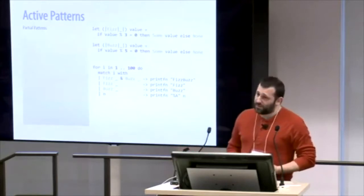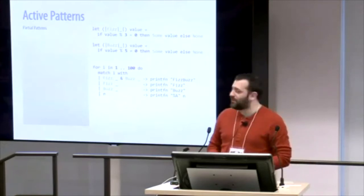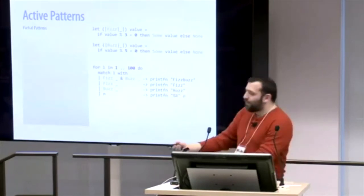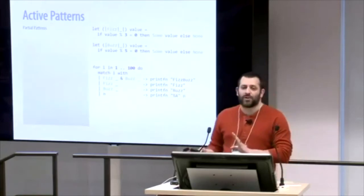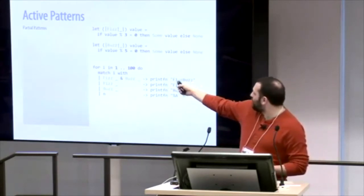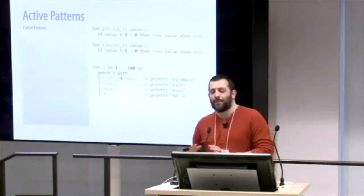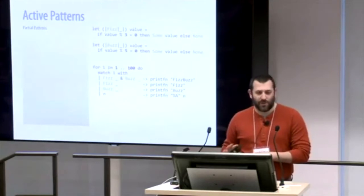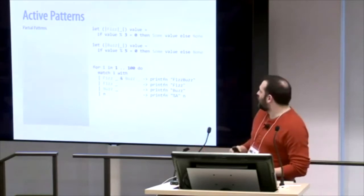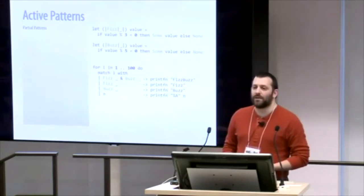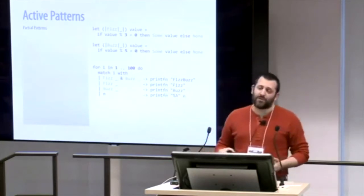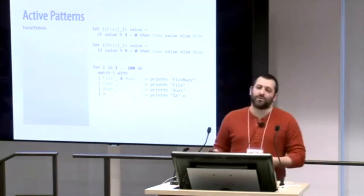Here again we're doing FizzBuzz. We've now defined Fizz and Buzz as discrete partial patterns. We use them in our match statement — we can match distinctly on n, on Fizz, or on Buzz. We can switch from doing an alternation match with a pipe, to doing a conjunctive match with an ampersand, and this will check that I matches both Fizz and Buzz. This is a nice thing in pattern matching that you don't really see in a lot of other languages: your matches can be exclusive or inclusive, and that opens up some very interesting scenarios.